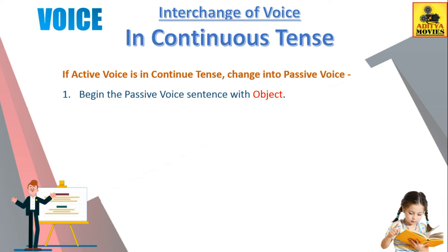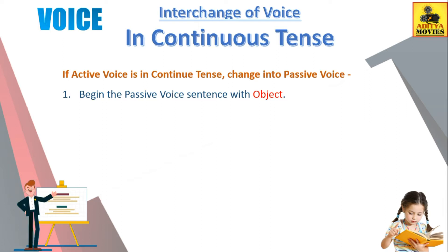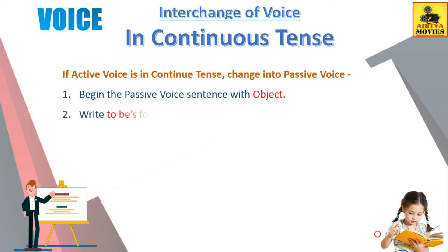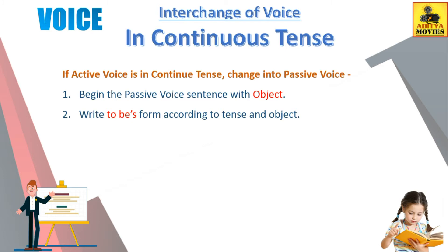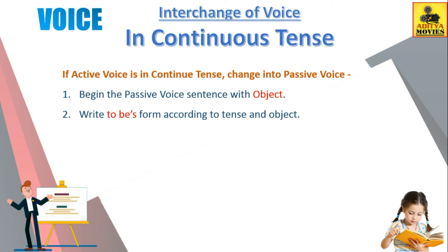While changing it into passive voice, we have to follow the general rules which we studied in the first part. According to that, begin the passive voice sentence with the object. We have to use the to be's form according to the tense and object. But remember, in future continuous tense we don't convert active voice into passive voice — only present and past tense changes are made.